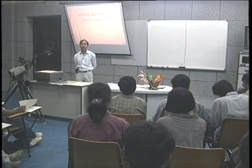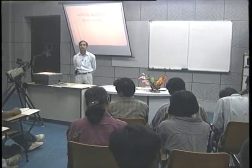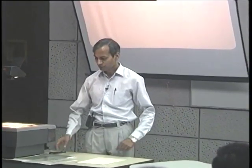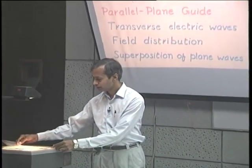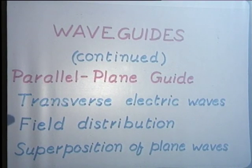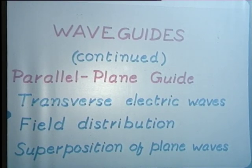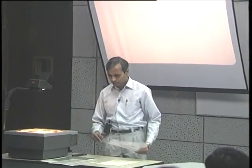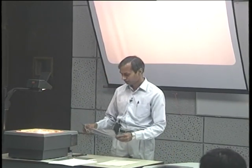Welcome to the 24th lecture in the course Engineering Electromagnetics. We continue with our discussion on parallel plane waveguides, which we started in the last lecture. The topics we consider today are the transverse electric waves, the field distribution associated with this kind of waves, and finally, how the field of the TE waves can be expressed as a superposition of plane waves. Before we take up these topics, let us have a brief recapitulation of the material we discussed last time.